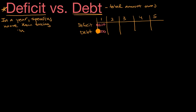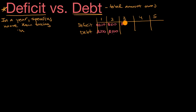Everything here is in billions. So let's say the next year we run a deficit of 100 billion dollars. Now we owe the money from before plus another 100 billion dollars, so that would be 300 billion. And then in year three, let's say we spend a lot more than we take in — a deficit of 500 billion. That will just add to our debt, so it's now going to be 800 billion.